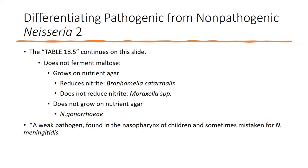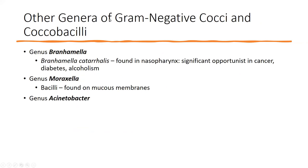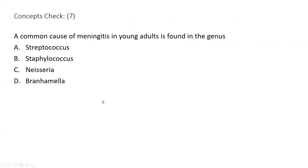The other genera of gram-negative cocci won't come up as commonly. Branhamella, Moraxella, and Acinetobacter are the other gram-negative cocci. Branhamella catarrhalis is a nasopharynx infection that's really only opportunistic; Moraxella can be seen in mucous membranes; Acinetobacter is very rare. Neisseria remains the common cause of meningitis in young adults.